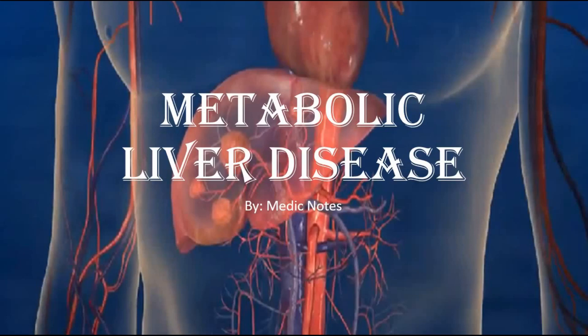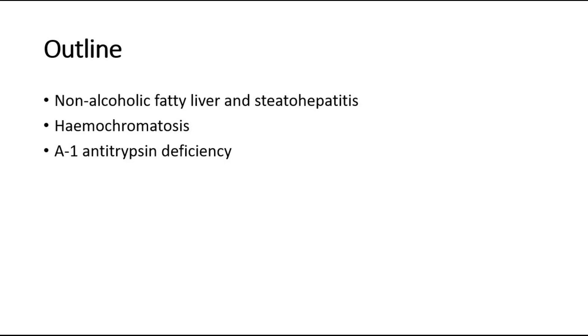This video is on metabolic liver disease. Here is the outline of the presentation. I will mainly talk about 3 types of metabolic liver disease. The first one is non-alcoholic fatty liver and steatohepatitis. The second is haemochromatosis. And the third is alpha-1 antitrypsin deficiency.